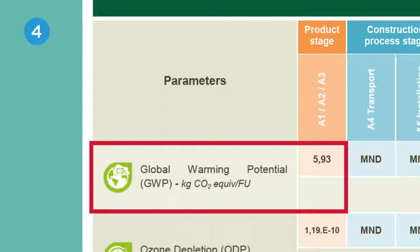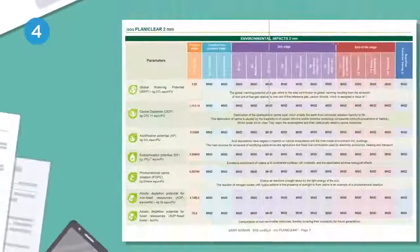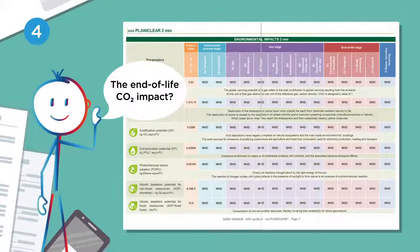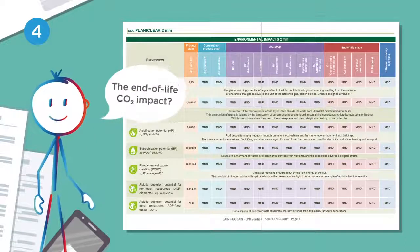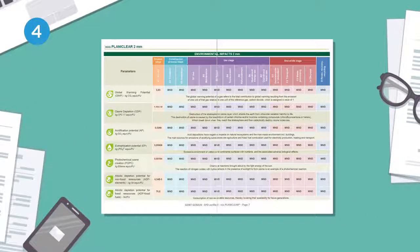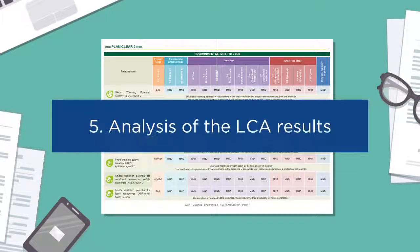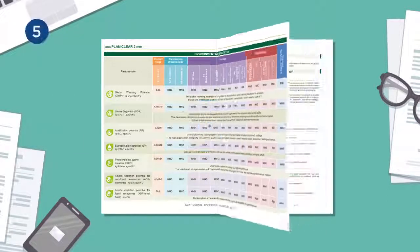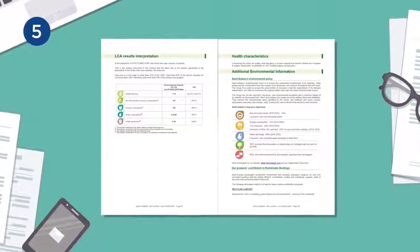So to produce one meter squared of SGG Planibel Clear two millimeter, we emit 5.93 kilograms of CO2 equivalent. How do we know the end-of-life CO2 impact of our Planibel Clear? It's impossible to say, because our LCA is cradle to gate, which means impacts are not calculated beyond the manufacturing stage.